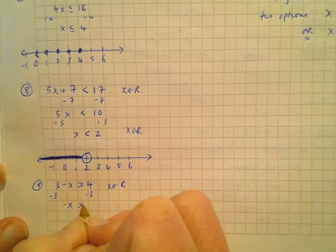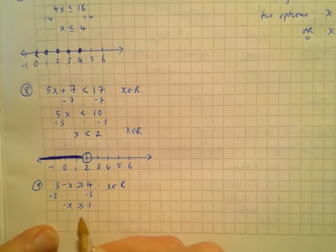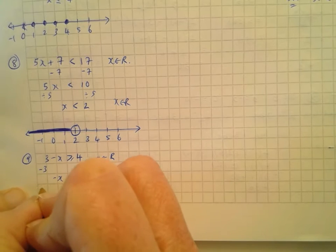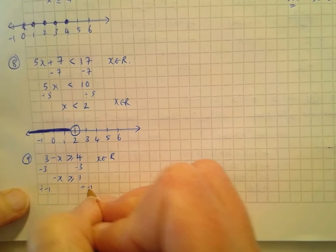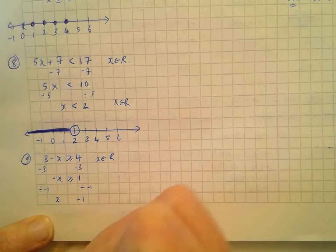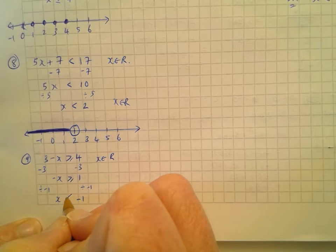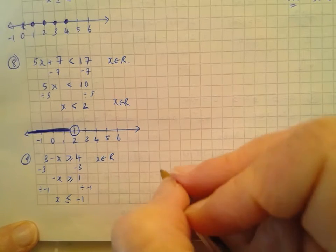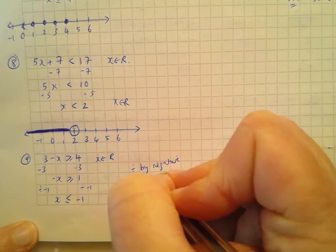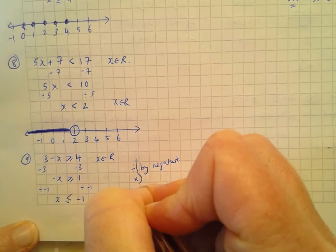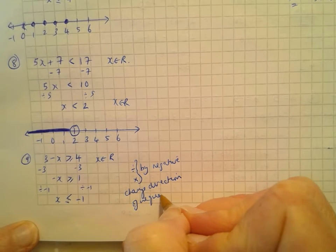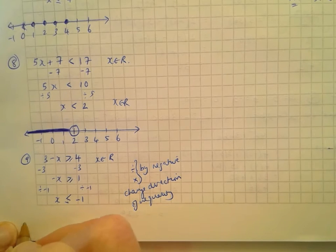Example 5: I need to identify the inequality from the number line. There's an empty circle around 3 and a solid line to the left of 3. A solid line means real numbers, so x ∈ R. It's to the left of 3 and doesn't include 3, so the inequality is x < 3, x ∈ R.